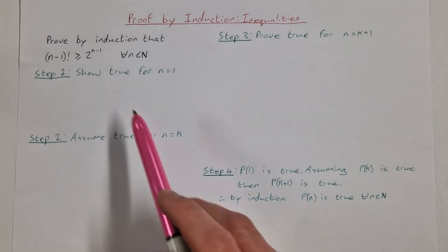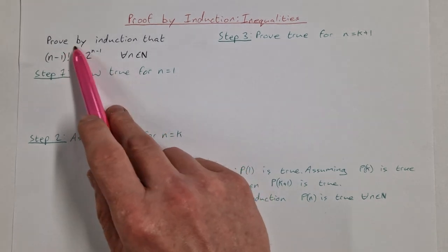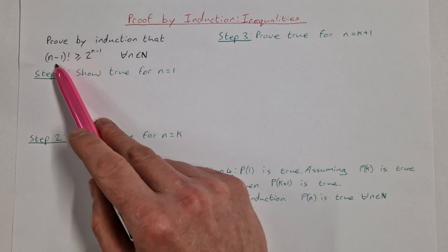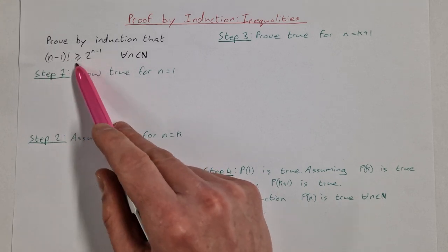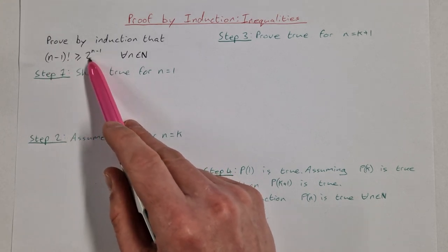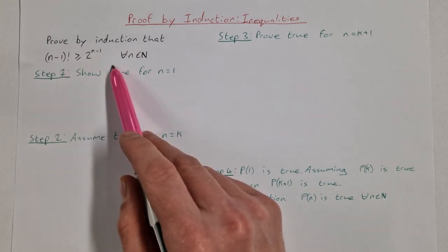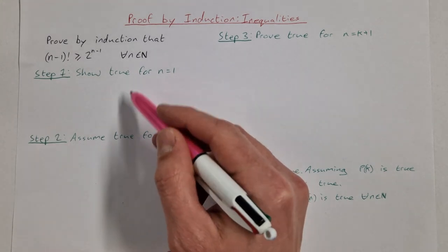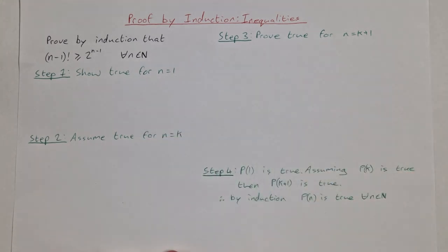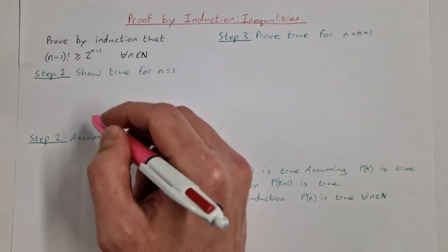For this one, we're proving by induction that (n-1)! is greater than or equal to 2^(n-1) for all n ∈ ℕ. The steps 1 to 4 are always the same — I have them written out like this.